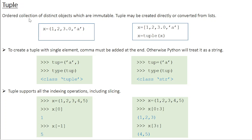Tuple is an ordered collection of distinct objects which are immutable. These are defined using a pair of normal brackets. Just like list, the elements of a tuple could be similar or distinct. Here I have a tuple x equal to 1, 2, 3.0 and 'a'. The first two elements are integers, the third one is a float, and the last one is a string.